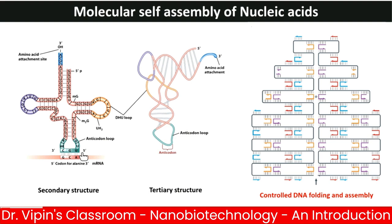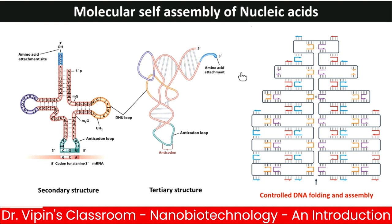In tRNA folding, stems are regions where there is complementarity, and loops are regions where there is no complementarity and remain unpaired. Loops actually provide the functionality — for example, the anticodon loop matches with the codon on the mRNA, and only if complementary will the amino acid at the three-prime end be transferred.